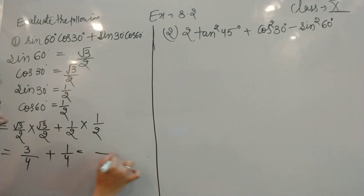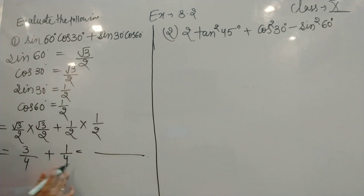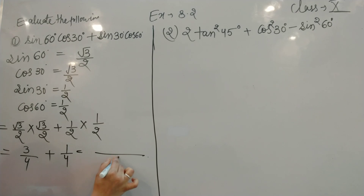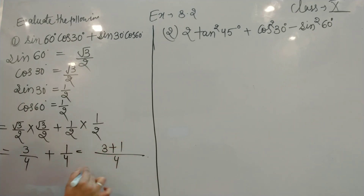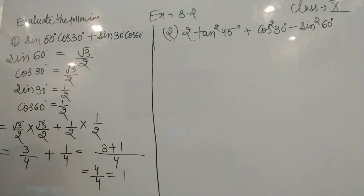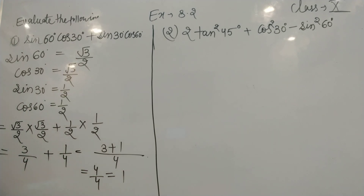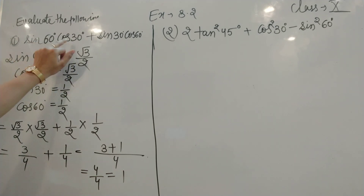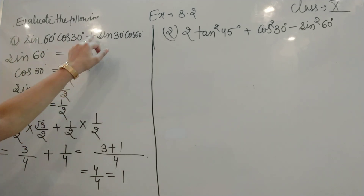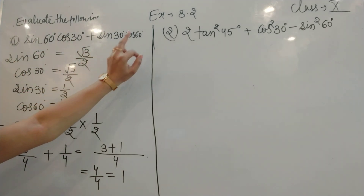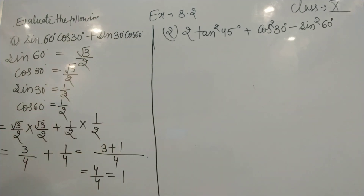Now we take the LCM, which is 4. So we get 3/4 + 1/4 = 4/4, which equals 1. Therefore, sin 60° cos 30° + sin 30° cos 60° = 1.